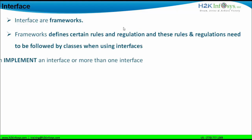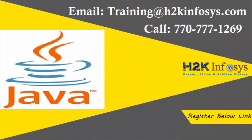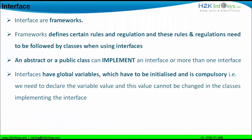A class can be public or abstract and it can implement an interface or more than one interface. It is possible that a particular class can implement more than one interface or a single interface. Interface global variables need to be initialized — that is compulsory — meaning they must be defined with a value, making them constant. The constant value of a global variable cannot be changed by a class implementing the interface.